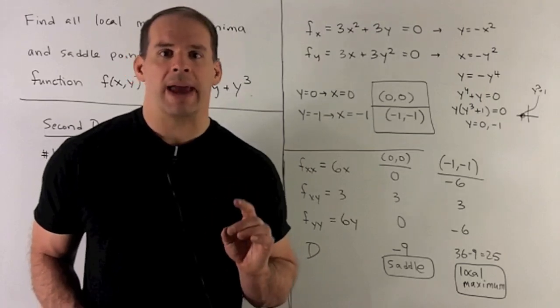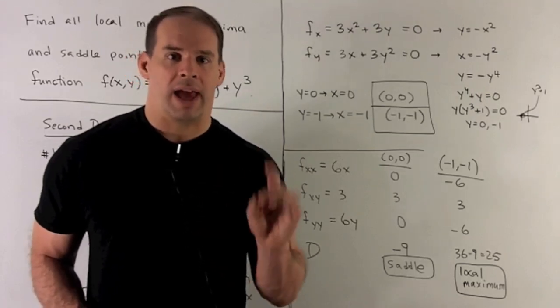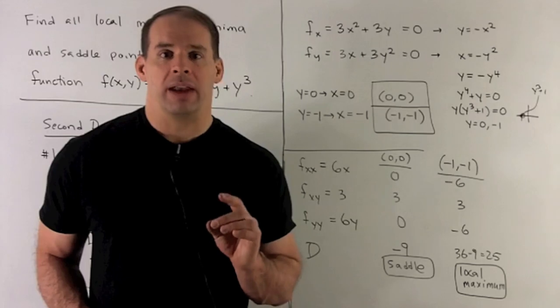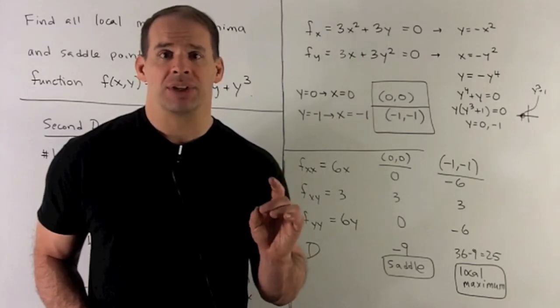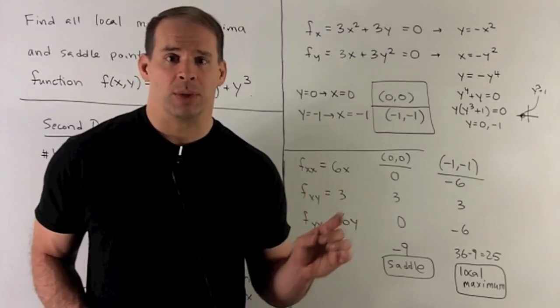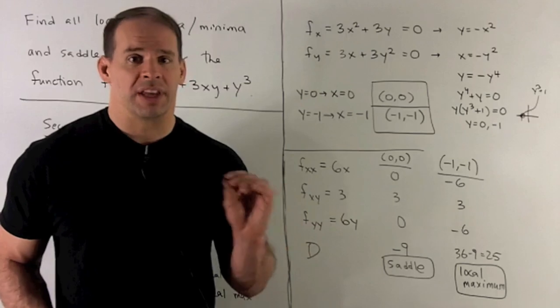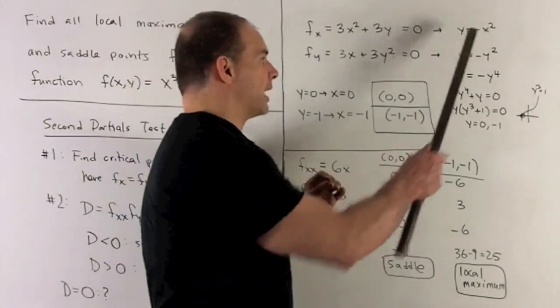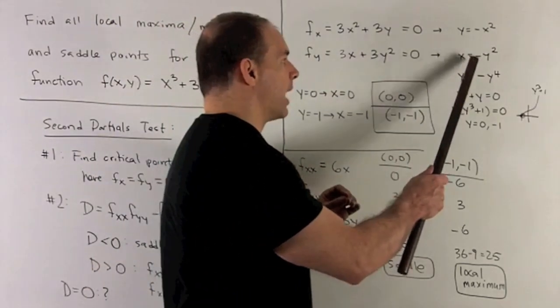Partial with respect to y. y is the variable, x is a constant. So, I'll get 3x plus 3y squared, set it equal to 0. This gives me the equations y equals minus x squared, x equals minus y squared.